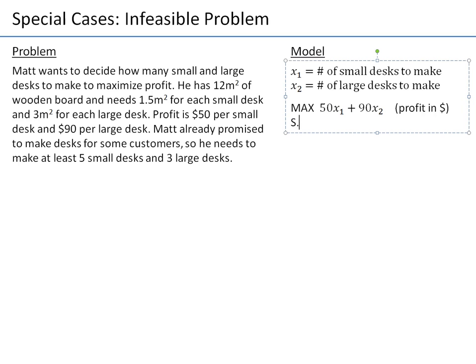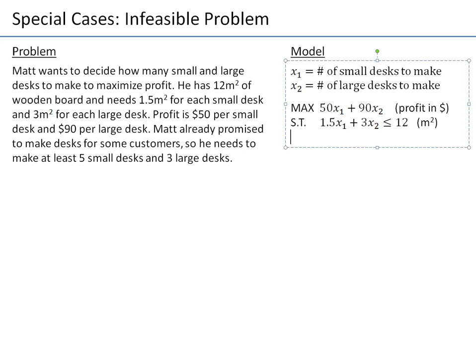Now what are the constraints? Subject to: he has limited wooden boards, so he uses 1.5 square meters for each small desk times x1, and 3 square meters for each large desk times x2. That has to be less than or equal to 12 — that's the number of square meters of wooden boards available. I'll just label it square meters since we know this refers to wooden boards.